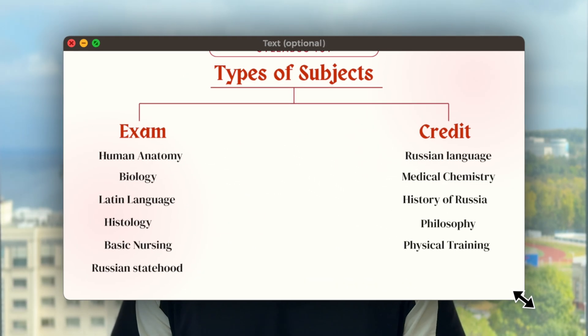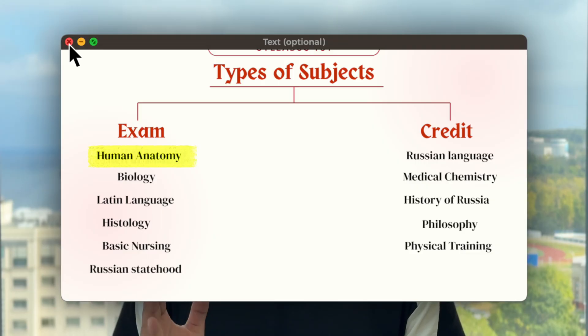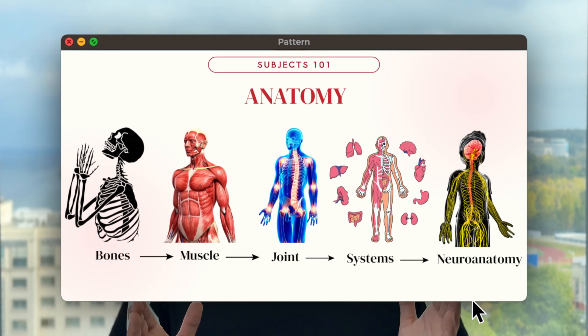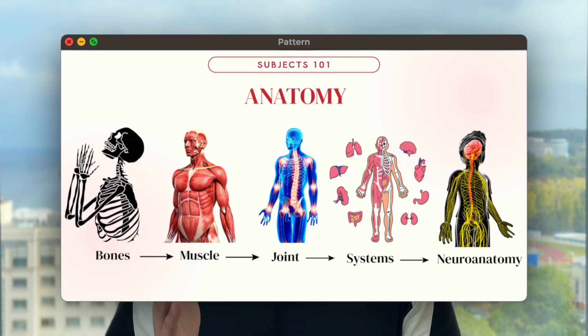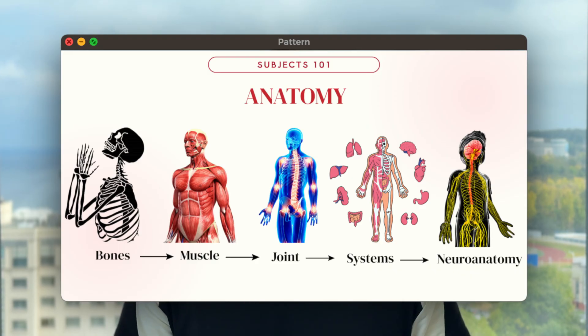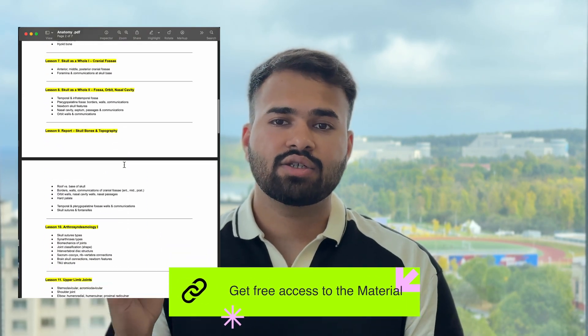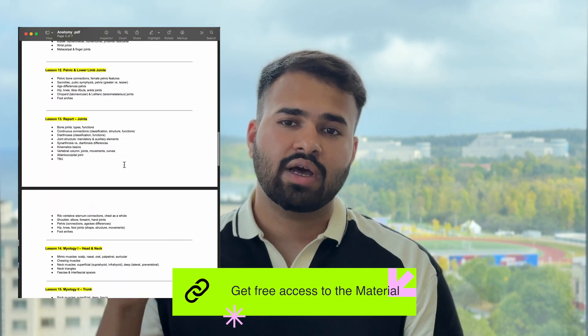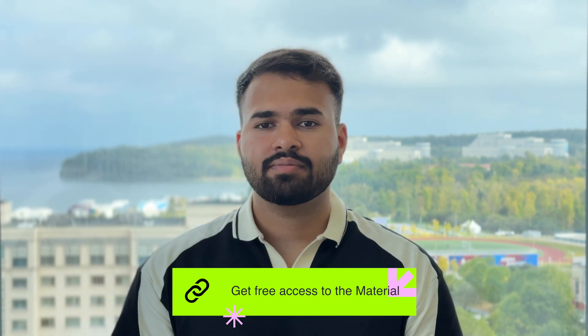First, let's start with anatomy. As you know, it is one of the most important subjects of your first year. You will start with bones, then muscles, then joints, then systems, and then neuroanatomy. To keep this video shorter, I am not reading each topic out — everything will be mentioned in the description.